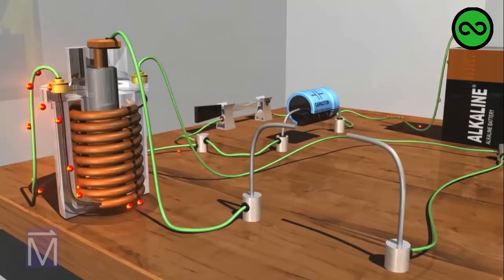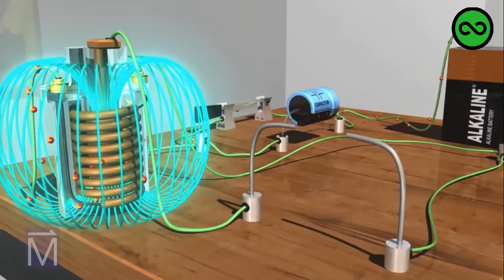As current flows to the primary coil, a magnetic field gradually builds up around it, as well as around the secondary coil housed inside.